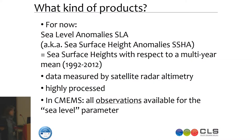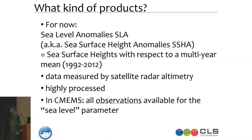The products are sea level anomalies — sometimes called sea surface height anomalies, it's the same. Mostly these are sea surface heights with respect to a multi-year mean; just now we are using a 20-year mean from 1992 to 2012. The data are measured by satellite radar altimetry and are highly processed. You can find them in the CMEMS catalogue by choosing observation, sea level, and surface observation.